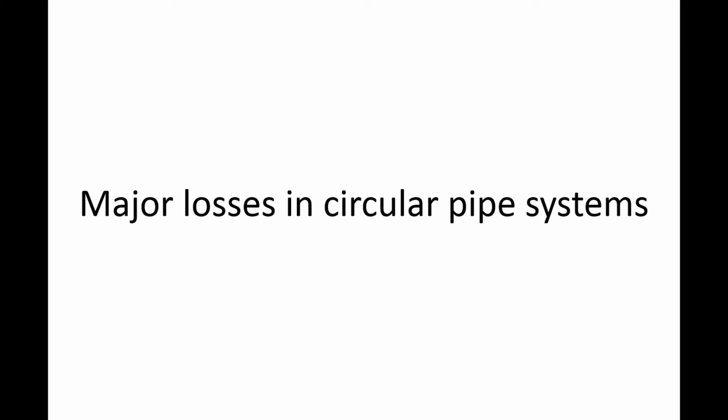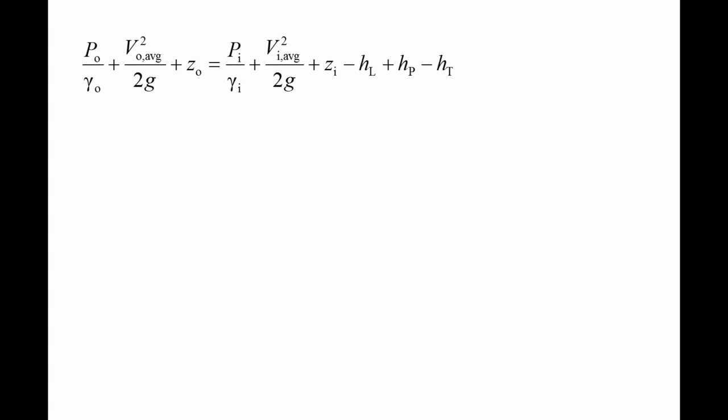In this lesson, we will discuss how to calculate the major losses in a circular pipe system. When using the control volume approach to analyze pipe systems, we often will use the conservation of energy equation for a control volume with one inlet and one outlet.